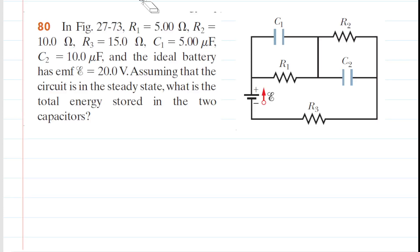If you haven't done so yet, please pause the video and reread the problem before listening on. The key to solving this problem is to notice that the circuit is in the so-called steady state. What that means is that the circuit has been in operation long enough for the capacitors to have reached their full charge, and once the capacitors reach their full charge, current will no longer be flowing to them.